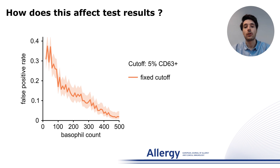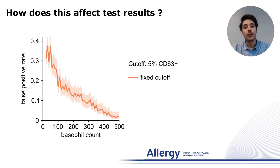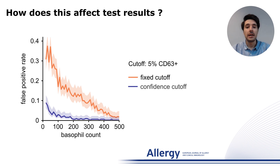Here is why this matters. Let's consider false positive rates, for example. When negative samples are measured, many of these could be incorrectly classified as positive at low basophil counts if we used a fixed cutoff.